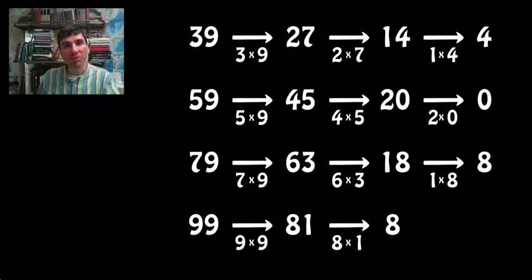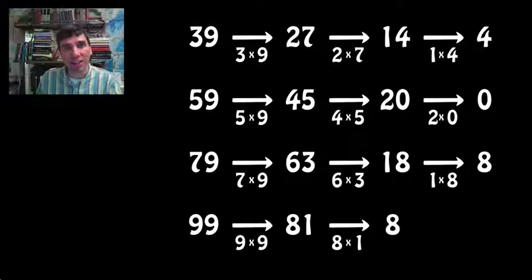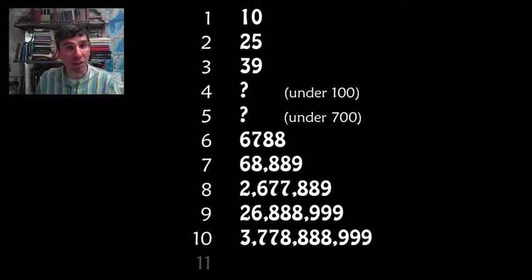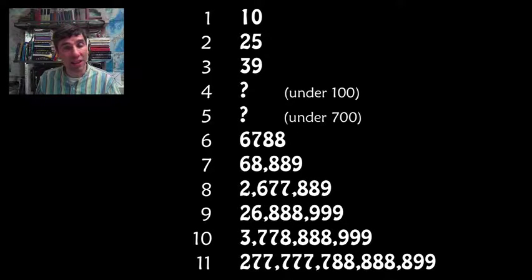The person that we have to thank for multiplicative persistence is Neil Sloan. Neil Sloan loves sequences, and this sequence is one of the most unusual that he's discovered. Look at the minimum number that has a specific multiplicative persistence. So for example, the minimum number that has a multiplicative persistence of 3 is 39. The minimum number that has a multiplicative persistence of 6 is 6788.